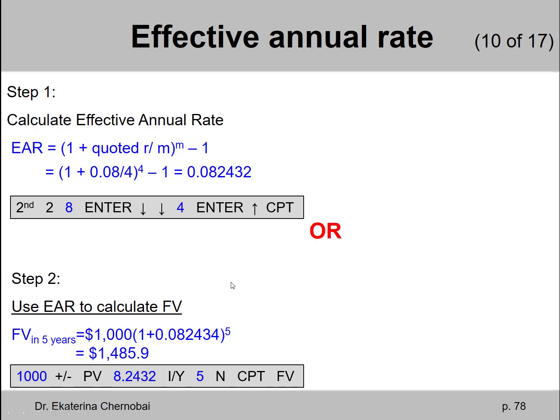There is a different solution which is a lot easier. You can first realize that we have a total of 20 quarters over 5 next years.